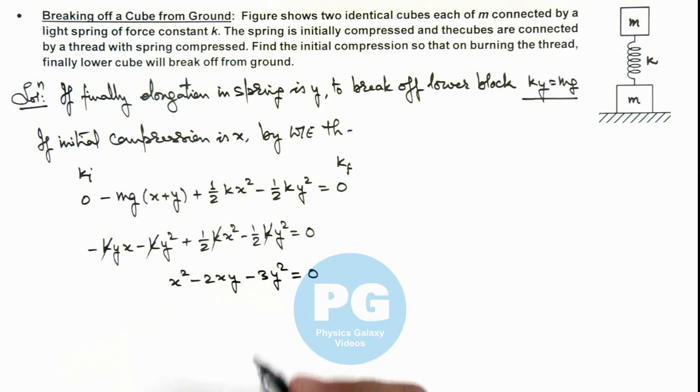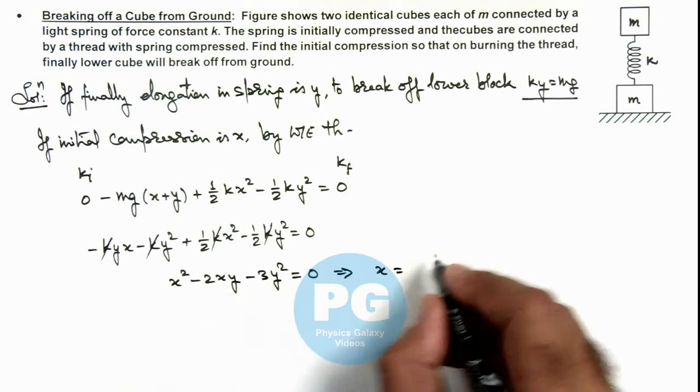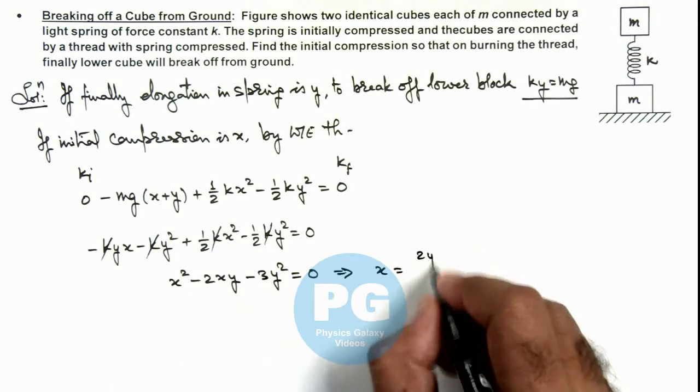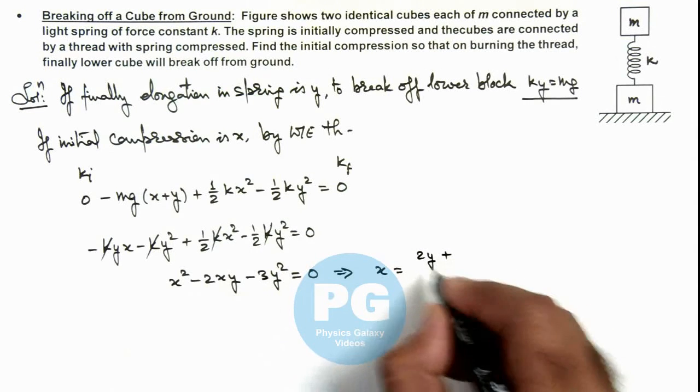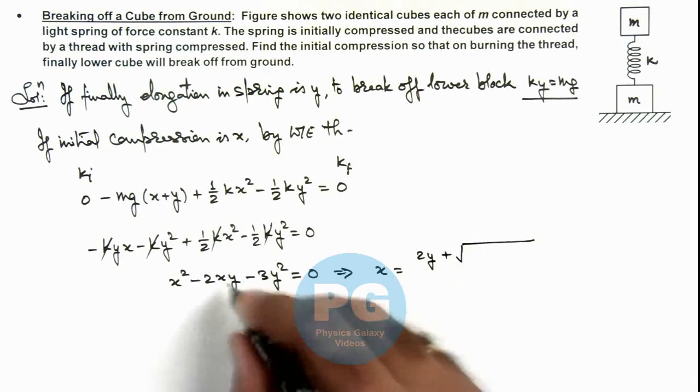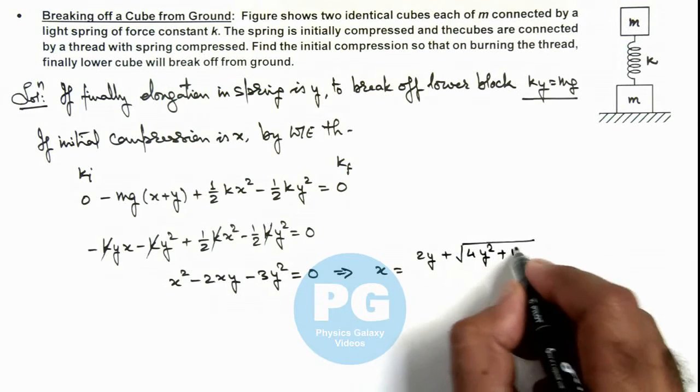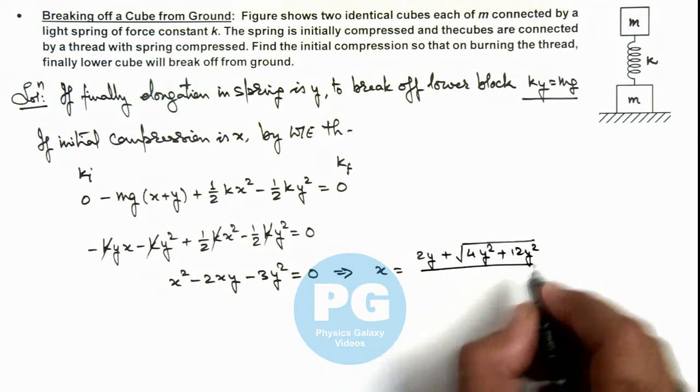If we solve this quadratic equation, the value of x will be minus b, this is 2y, plus (obviously minus sign we can discard) this is root of b², this is 4y² plus 12y², divided by 2.